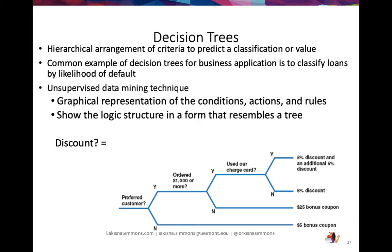Decision trees are another unsupervised data mining technique that uses a logical tree structure. For example: if a customer is a Macy's preferred member and ordered $1,000 or more and used their credit card, they're eligible for a five percent plus an additional five percent discount. A decision tree can be programmed into a cash register so the register automatically applies the correct discount based on what the agent enters — Macy's Saturday one-day sale is a great example of this in practice.